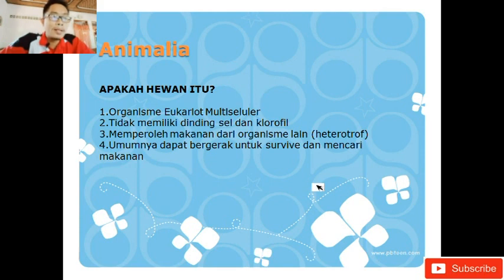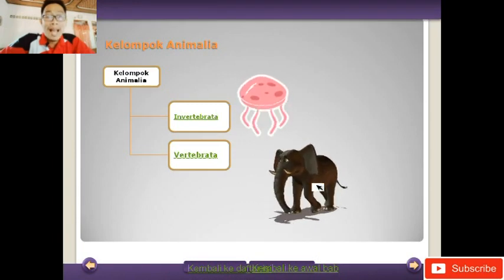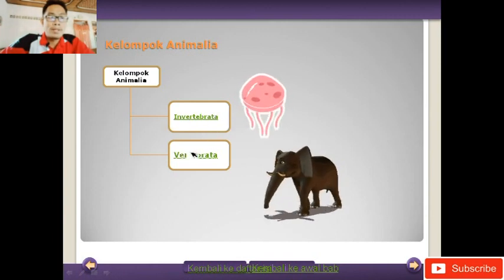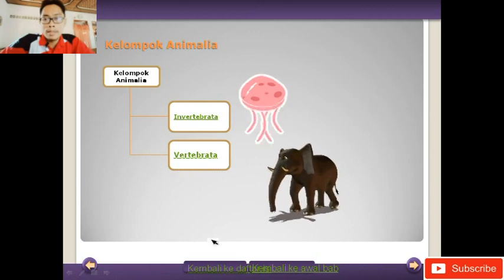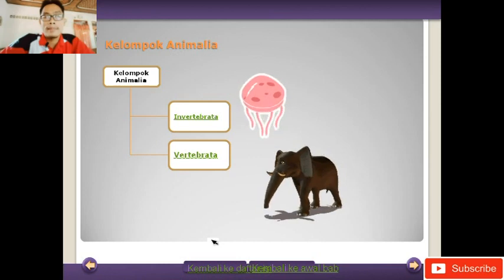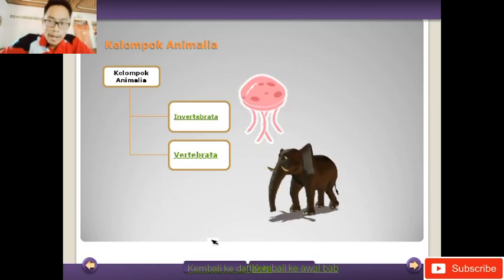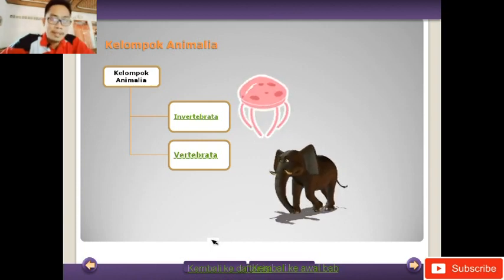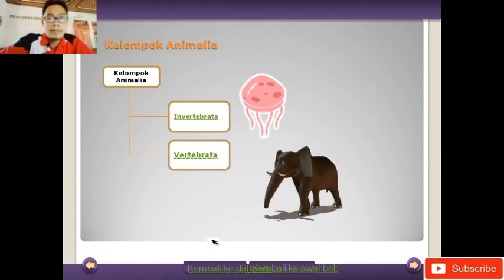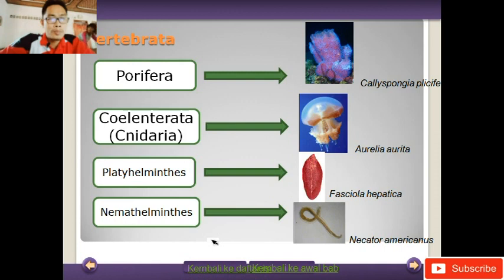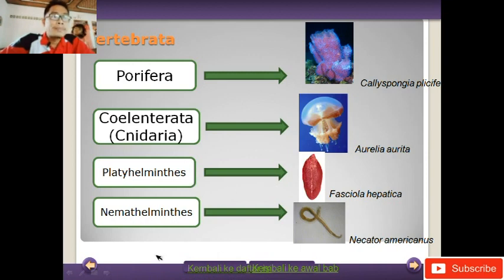Kebanyakan dari animalia ini memiliki alat gerak, baik berupa otot, ataupun rangka, ataupun yang lain. Kelompok animalia ada dua macam, yaitu invertebrata atau avertebrata, dalam bahasa Indonesia hewan yang tidak memiliki tulang belakang, sedangkan yang kedua adalah vertebrata, hewan yang memiliki tulang belakang. Kita bahas yang invertebrata terlebih dahulu. Yang pertama adalah Porifera atau hewan berpori.